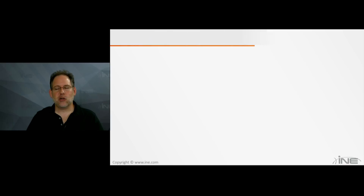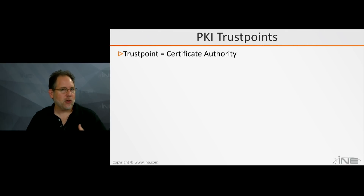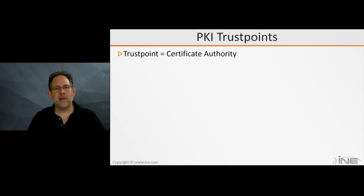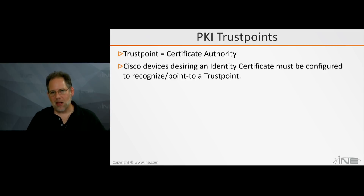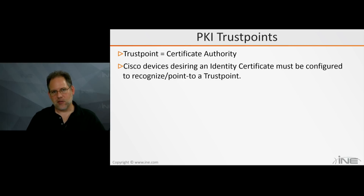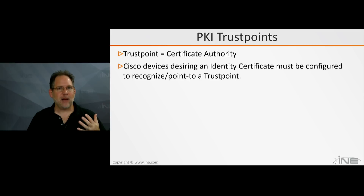A trust point is a Cisco IOS term for the certificate authority who's going to be giving you your digital certificate. I'm going to use a router as my PKI client — a PKI client is another term for the device that wants and is requesting a certificate. I'm also going to use a router as my PKI server. My PKI client has to have configuration commands to point to that server and know how to reach it.